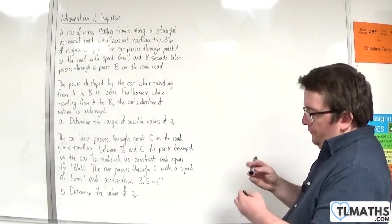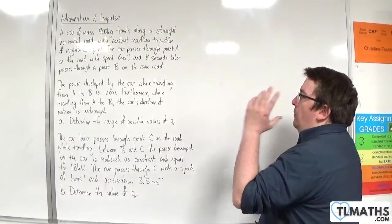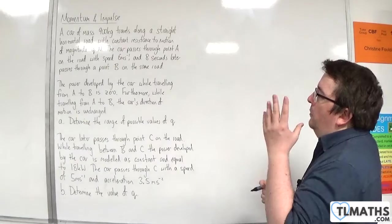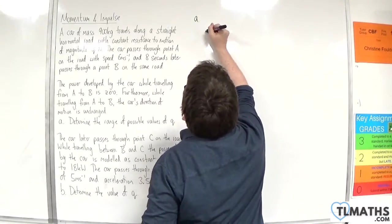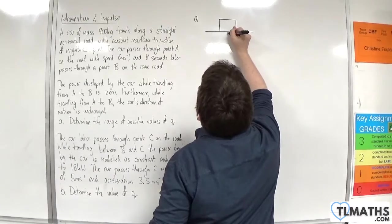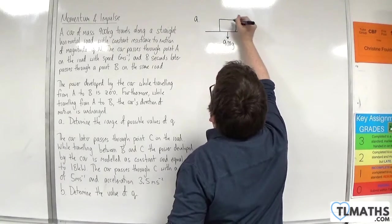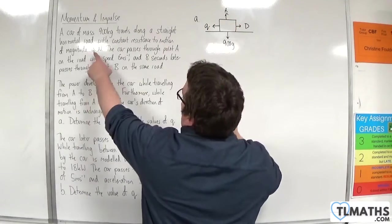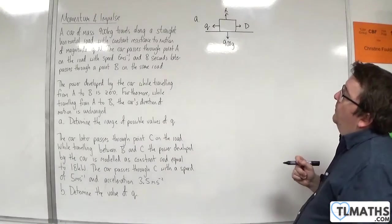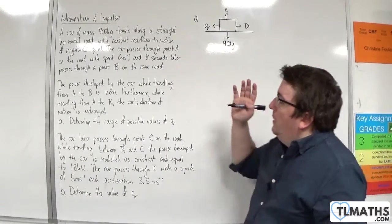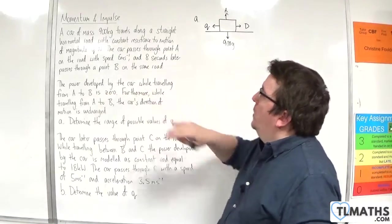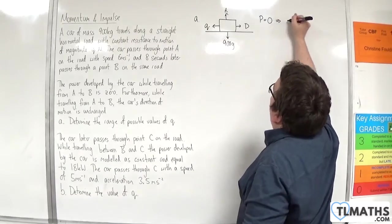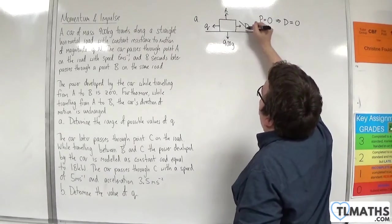For part A, I'm going to show you two possible ways of considering it. The first thing we're going to do is draw a diagram. Here's my road, here's my car — it has a weight of 900G, there's a normal reaction force, there's going to be a driving force, and the constant resistance force of magnitude Q newtons. Now, because the power developed from A to B is zero, this implies that the driving force must be zero.